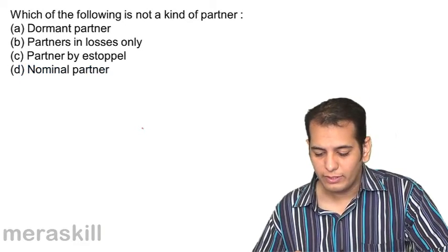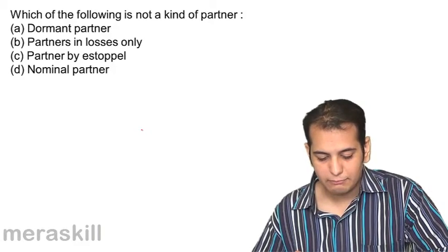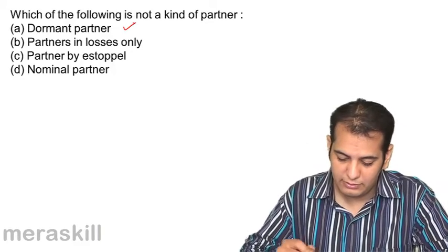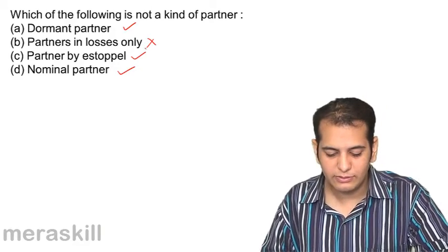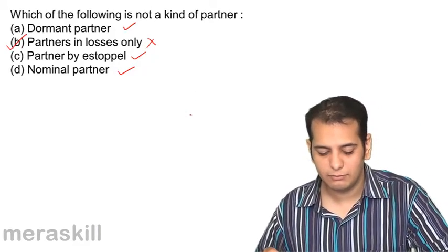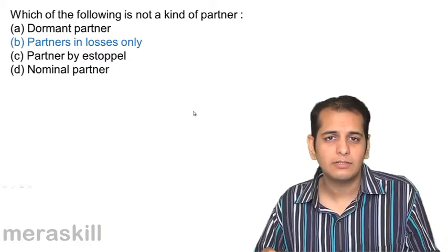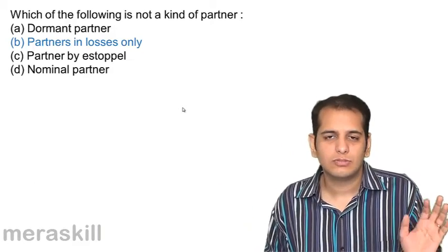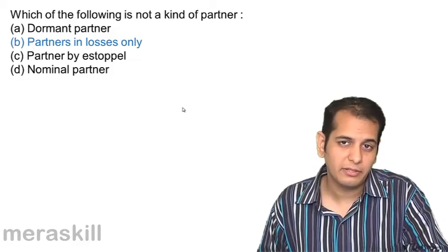Which of the following is not a kind of partner? A. Dormant partner. B. Partner in losses only. C. Partner by estoppel. D. Nominal partner. Dormant partner is a type, estoppel is a type, nominal is a type — only 'partner in losses only' is not a type. So the answer is B. We have partner in profits only, but there is no partner who will only take part in losses and not take part in profits. Even a fool will not be inclined to take part in losses only and not take part in profits.